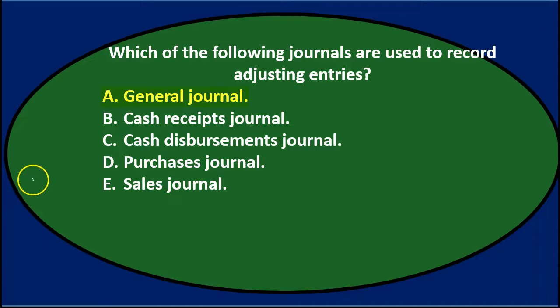The options are: A. General Journal. B. Cash Receipts Journal. C. Cash Disbursements Journal. D. Purchases Journal. Or E. Sales Journal.